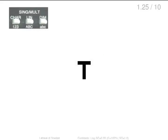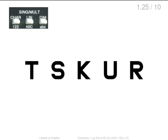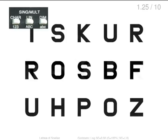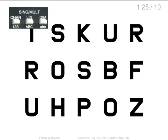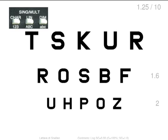The char key allows to display a single type. The lin key allows to display either a single or more lines. The dim key allows to display lines with equal or increasing visual acuity.